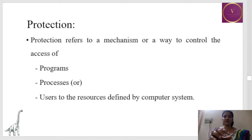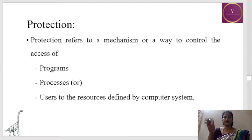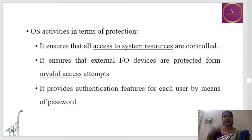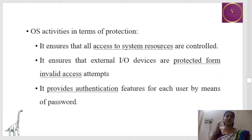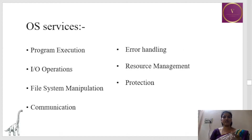The next service is protection. Protection refers to the mechanism by which the OS controls access to programs and processes, or restricts users from accessing a particular resource. Activities include ensuring all access to resources is under control, restricting access to external I/O devices, and providing authentication features — such as passwords — for users to access particular resources.